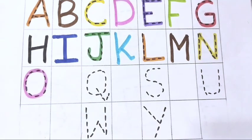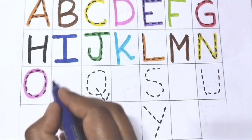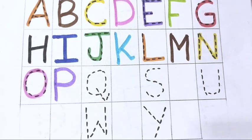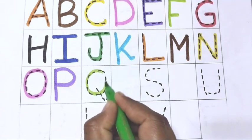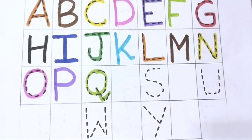O. O for onion. P. P for pink. Q. Q for queen.